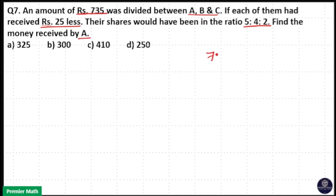We have total 735 rupees here and three people A, B, and C. If each of them receive 25 rupees less, the money remaining with them will be in the ratio 5:4:2. That is, their shares will be in the ratio 5:4:2.